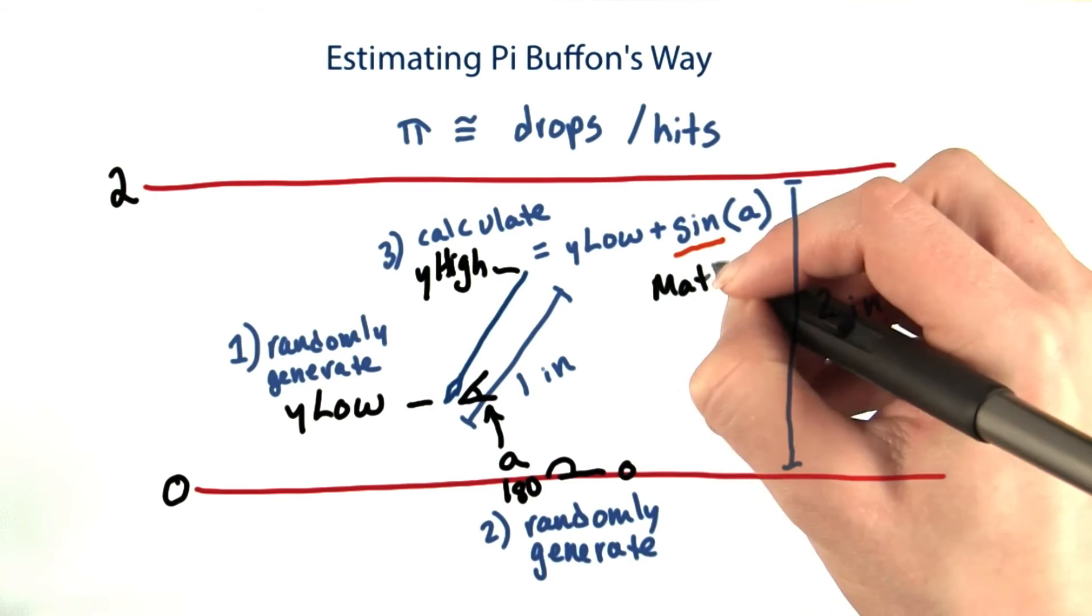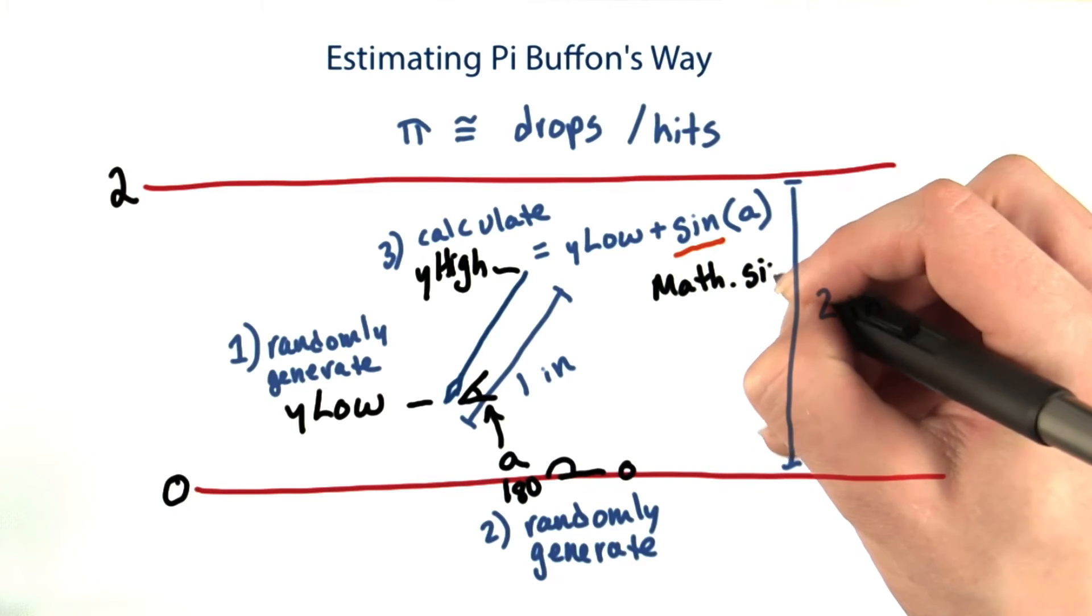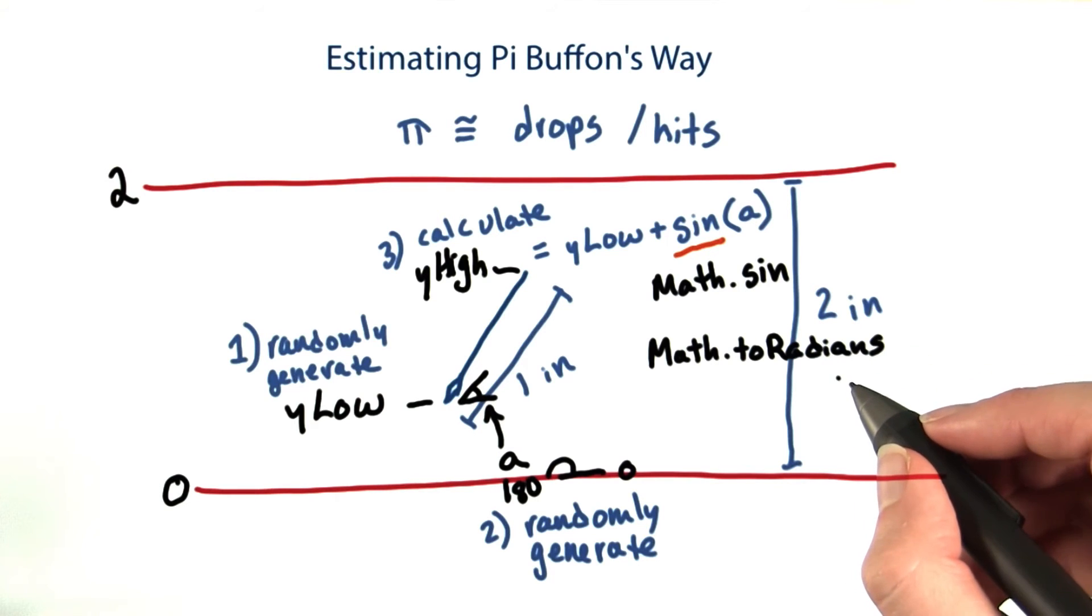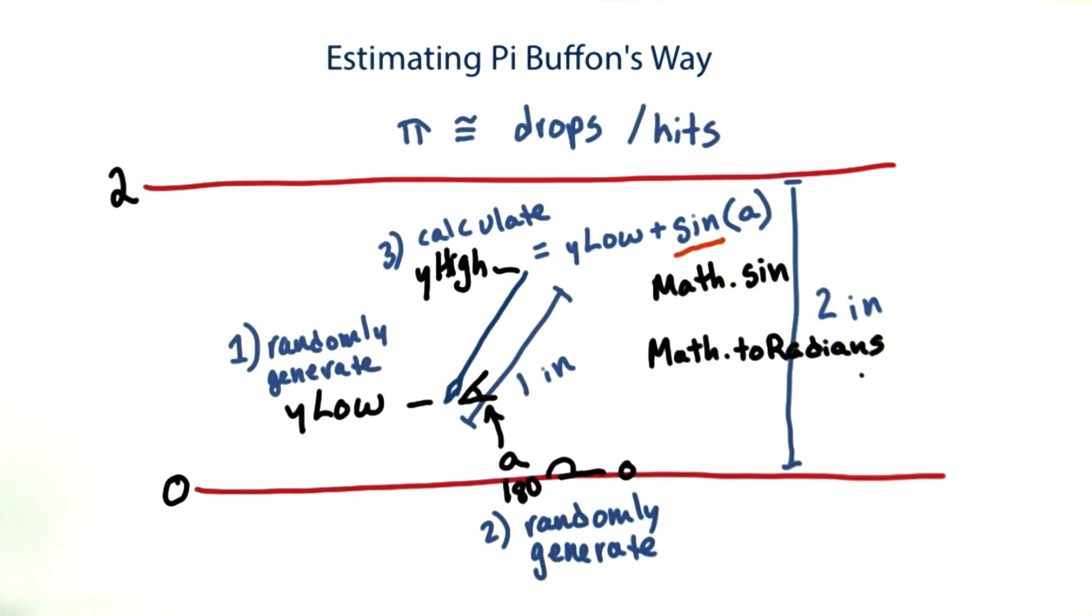And be careful, because math dot sine takes radians, not degrees. Math dot to radians can help you with the conversion. You can always review the math fact sheet if you don't quite remember how this works.